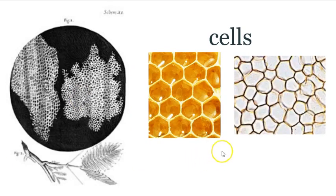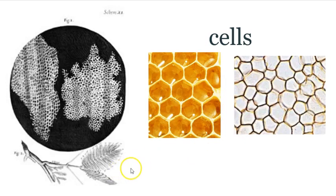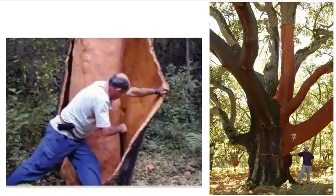He called them cells because they were reminiscent of the cells in a honeycomb. That's how cells got their name, and this was the first time they were really seen in great detail.